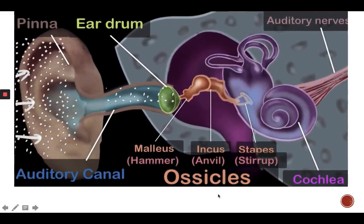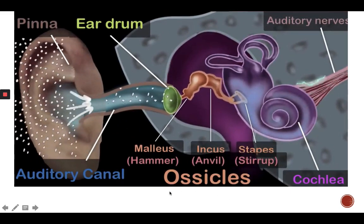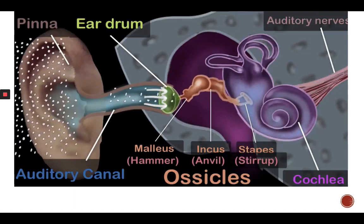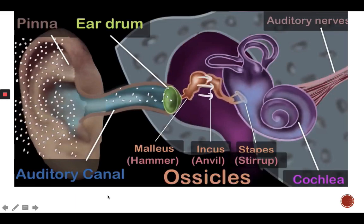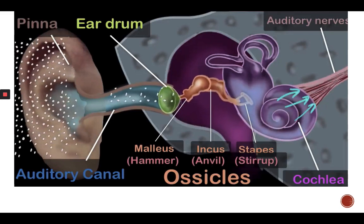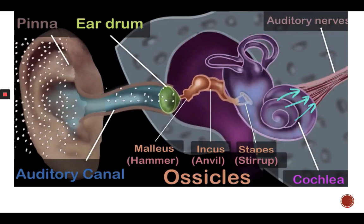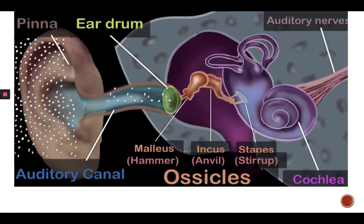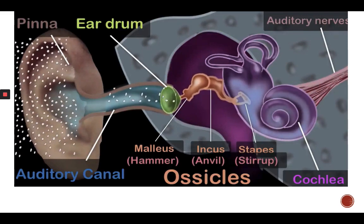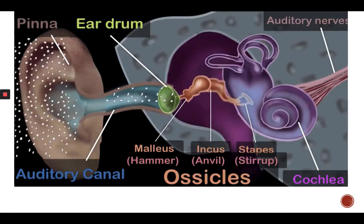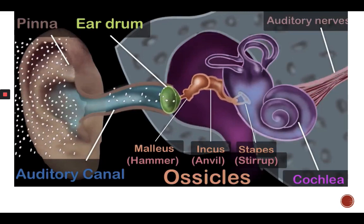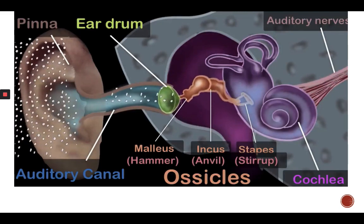To summarize: the outer ear collects sound waves through the pinna and directs them to the eardrum. The three ossicles of the middle ear amplify these sound waves and transfer them into the cochlea. The cochlea converts the vibrations of the particles into electrical signals and sends them to our brain. The fact that back-and-forth movement of air can be converted into the amazing experience of sound is truly remarkable.